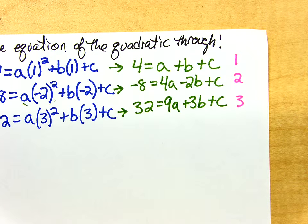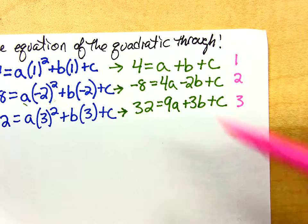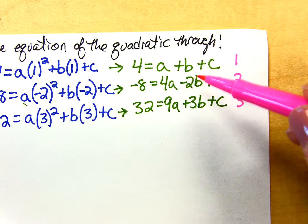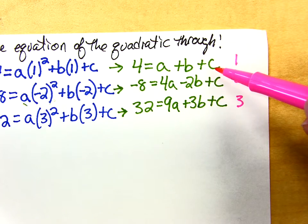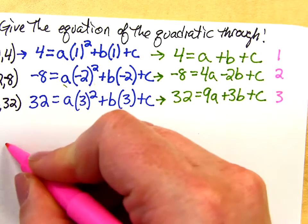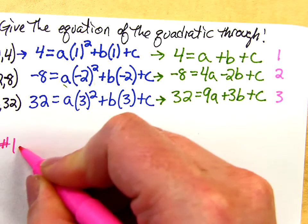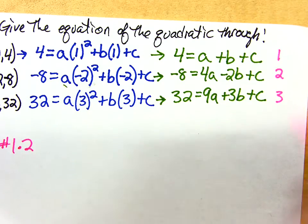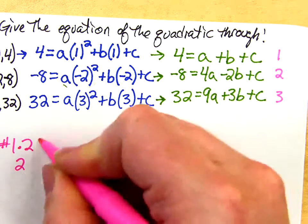1 and 2. And you want to cancel out the b's? Sure. So I can cancel out the b's by multiplying number 1 by positive 2. Correct? So I'm going to do equation number 1 times 2 and I'm going to join that with equation 2.